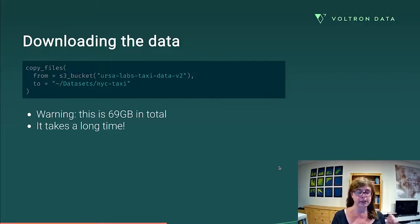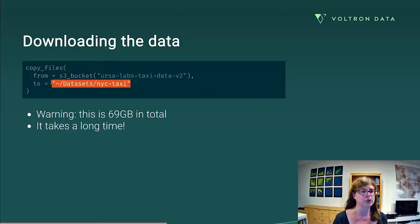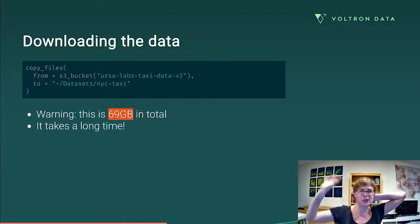So let's go and do it. Step one, I need to download the data. Conceptually, this is straightforward. All I have to do is go copy files. That's a function supplied by the arrow package from an S3 bucket, which is like the Amazon simple storage service. Here is the name of the S3 bucket that we have that has all this data in the format that I'm going to use it. And then I just say, copy it from there to a location on my laptop, which would be datasets slash NYC taxi. Straightforward, but long, because you've got 69 gigabytes worth of data. So don't expect that to terminate quickly. For me, that was an overnight job because my internet connection is terrible.